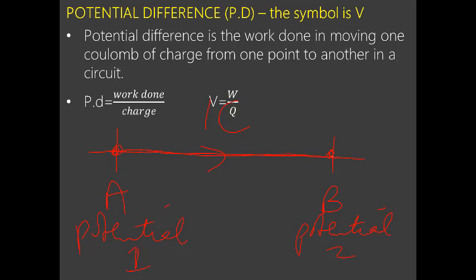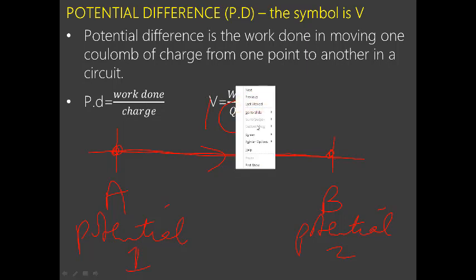By formula, PD equals work done over charge: V = W/Q. In other words, W = QV. Since Q = It, we can also write W = ItV, where W is the energy expended.